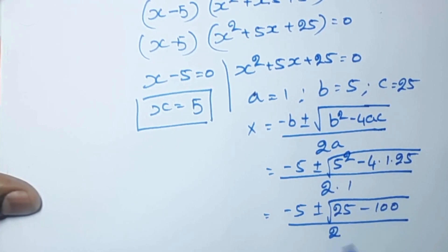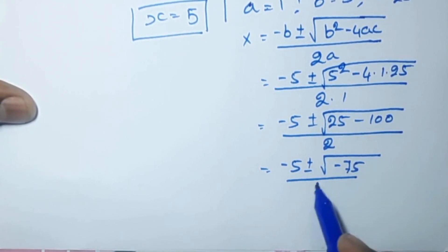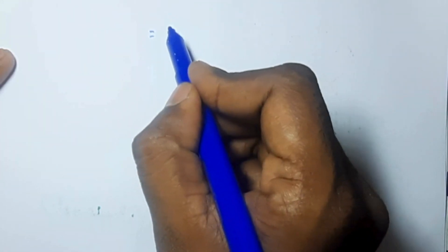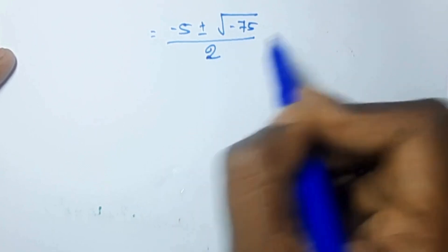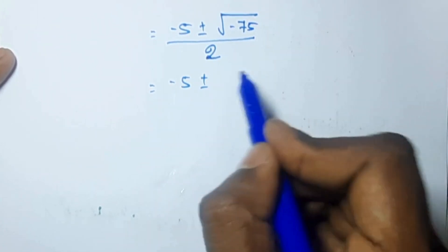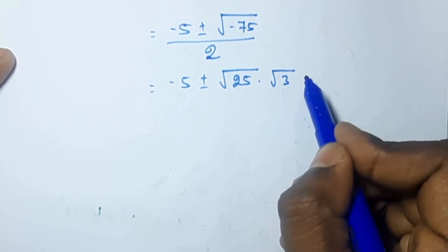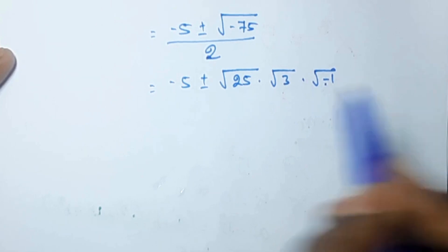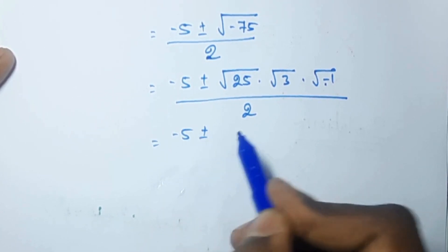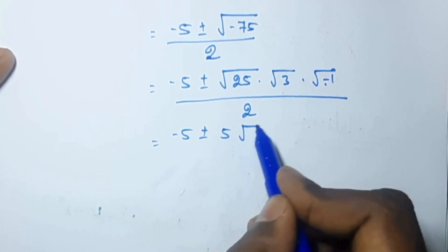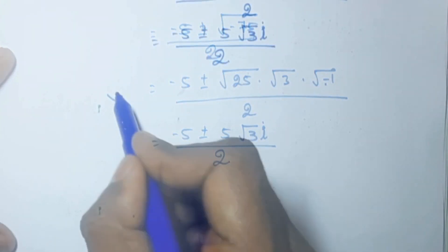So we get minus 5 plus or minus square root of minus 75, by 2. We can split minus 75 as minus 1 times 25 times 3, so the square root becomes 5 square root of 3 times i, where i is the imaginary unit. This simplifies to minus 5 plus or minus 5 square root of 3 i, by 2.